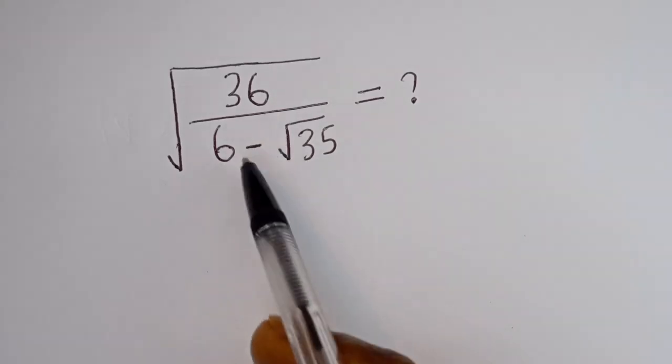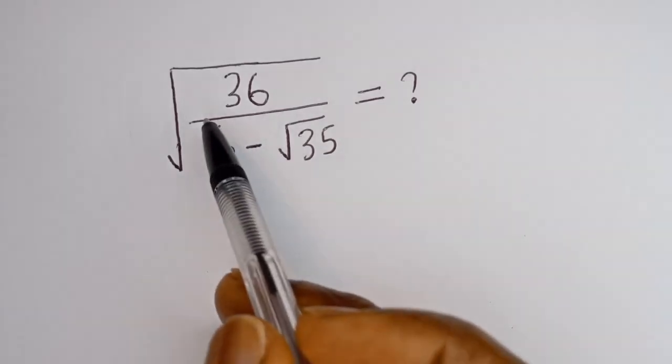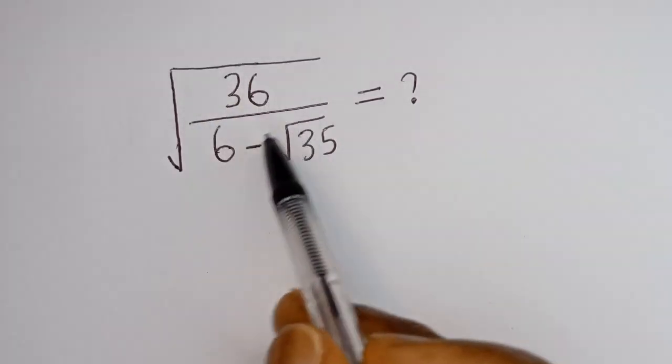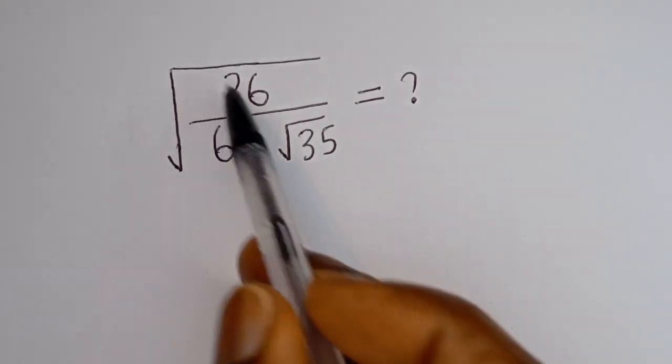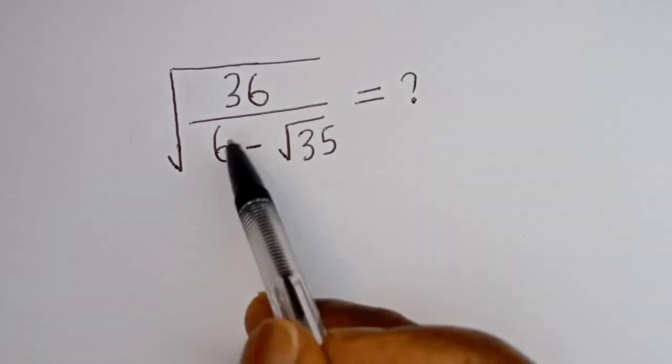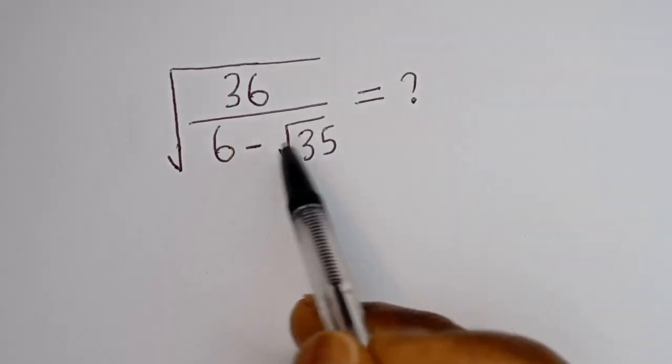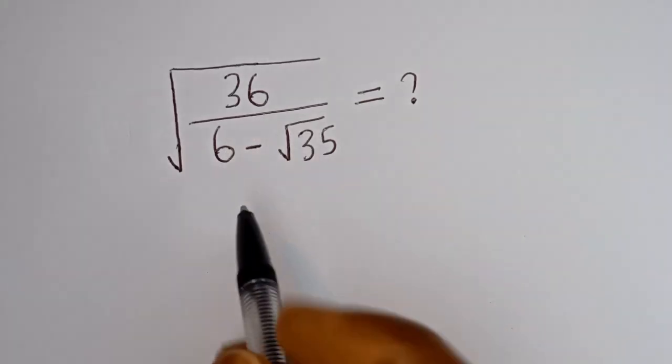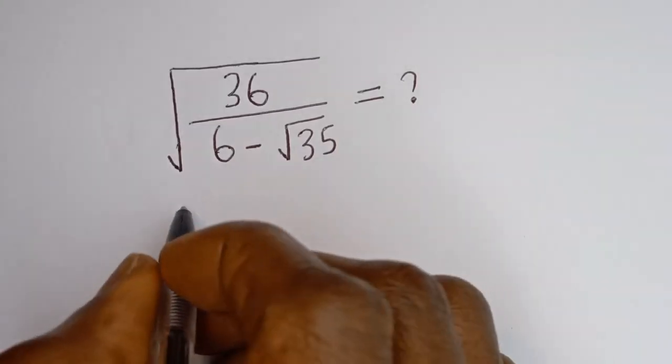Hello. How to simplify this nice math problem without using a calculator: we have square root of 36 divided by 6 minus square root of 35. Solution.